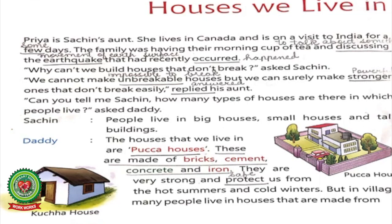Sachin asked: 'Why can't we build houses that do not break?' His aunt Priya replied: 'We cannot make unbreakable houses, but we can surely make stronger ones that do not break easily.' Underline 'unbreakable' — meaning: impossible to break. Underline 'stronger' — meaning: powerful. Underline 'replied' — meaning: answered.